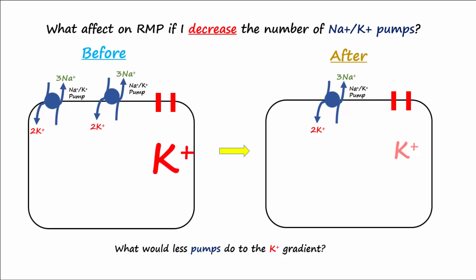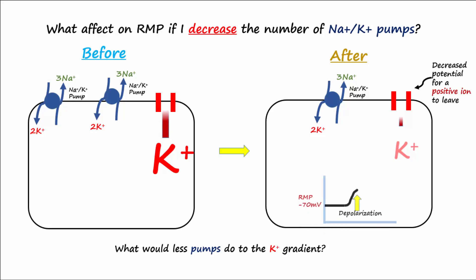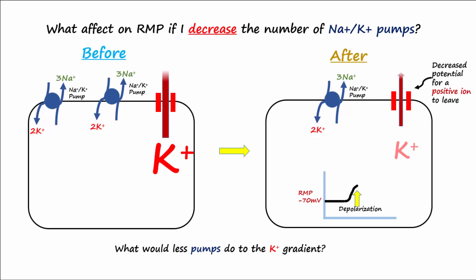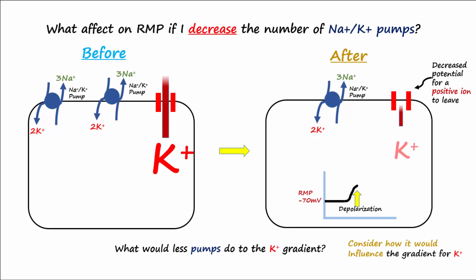Now would there be as big a concentration gradient for potassium to leave through its leak channels? No. If we decrease the potential for a positive ion to leave, this would depolarize or make the RMP a little more positive. The mistake people sometimes make: they see that potassium is lower inside the cell, so they automatically think this would make the inside less positive. You always have to consider how it would influence the gradient for potassium. If potassium is lower inside the cell, would it want to leave more or less? It would want to leave less, so you would be retaining more positive ions, making it more positive inside the cell — so depolarization.